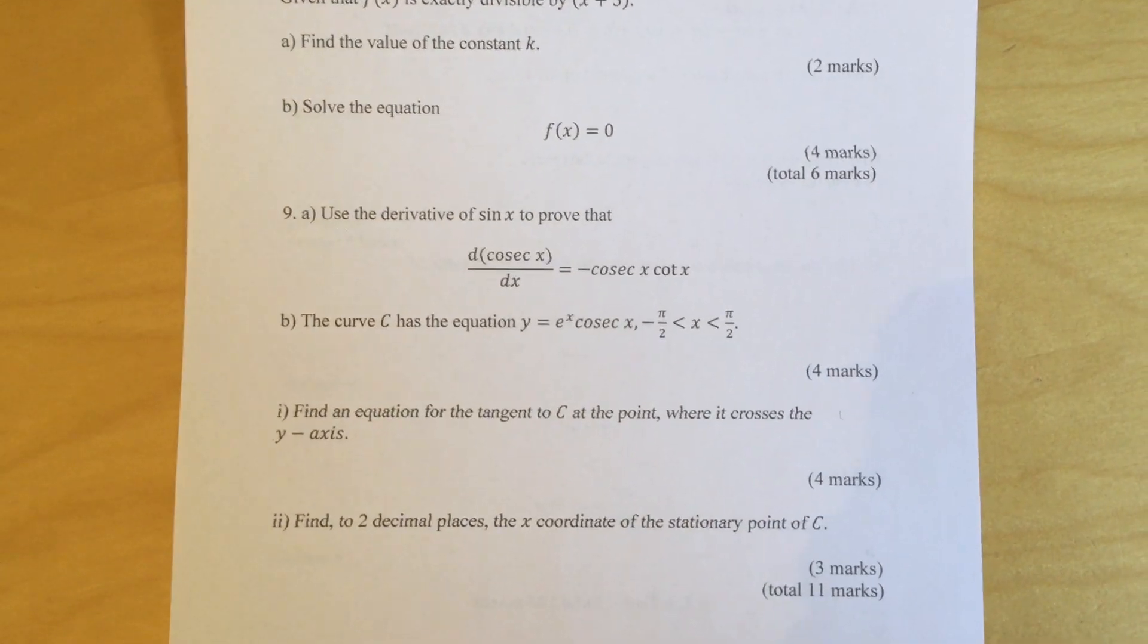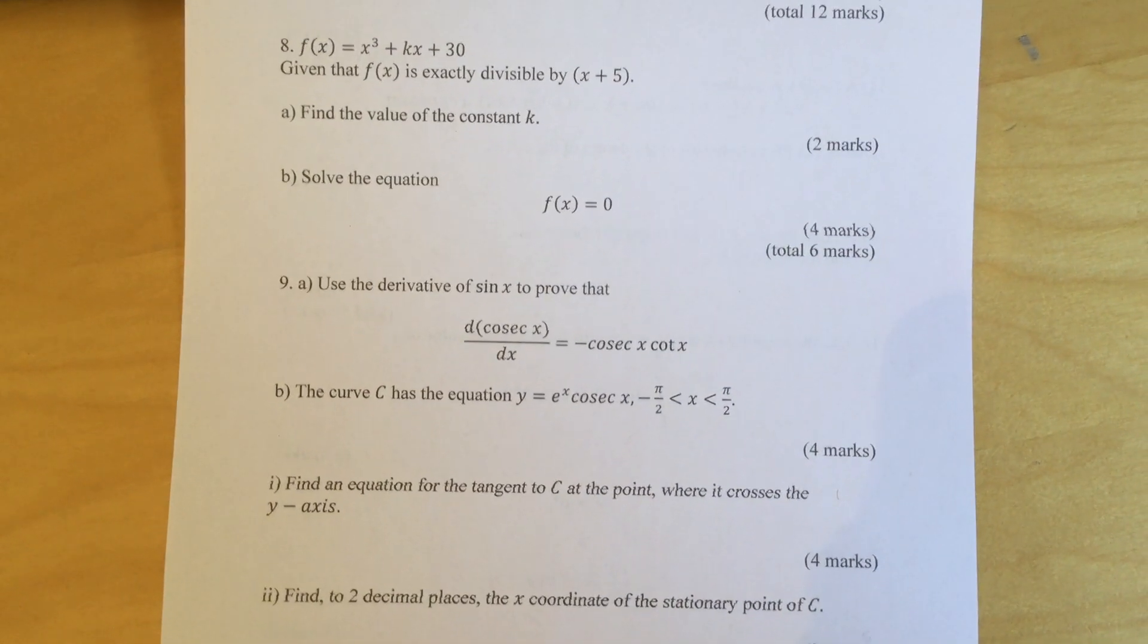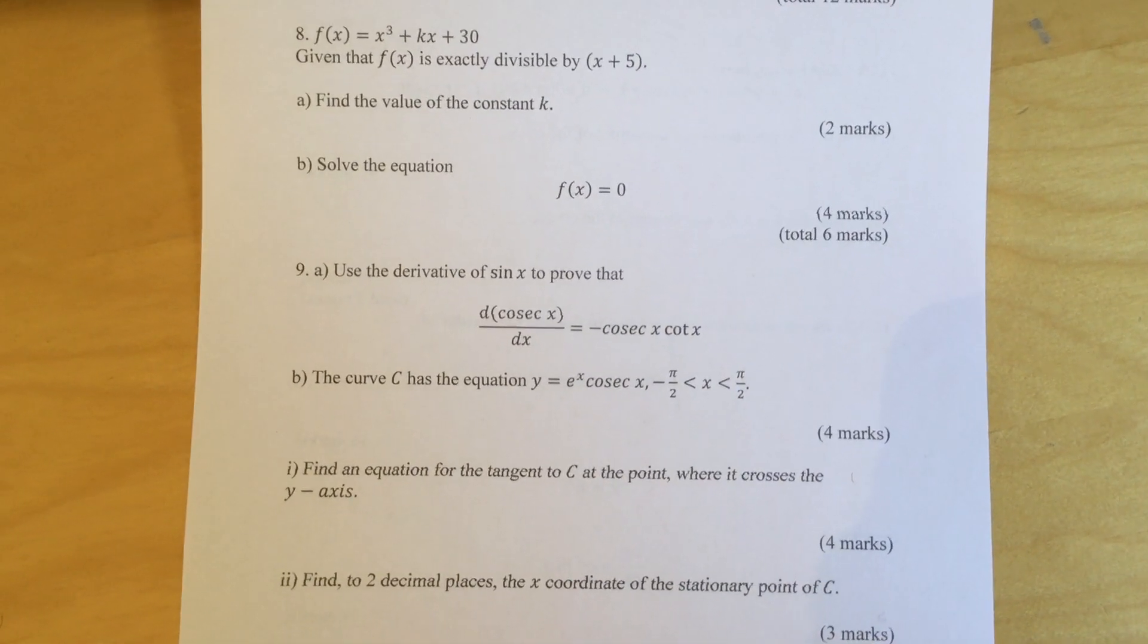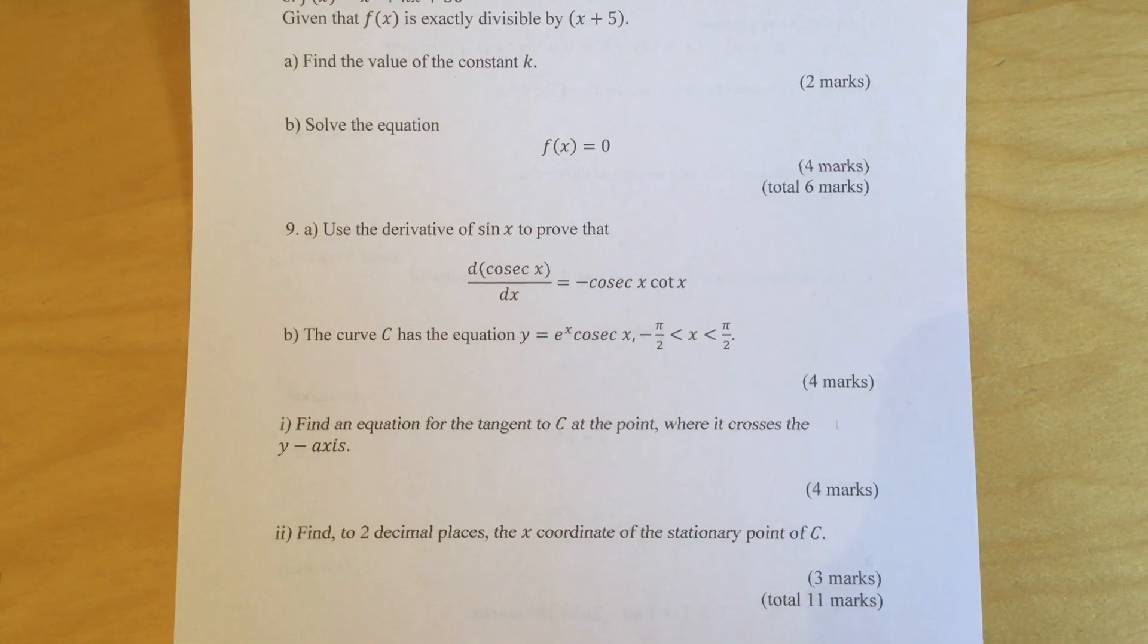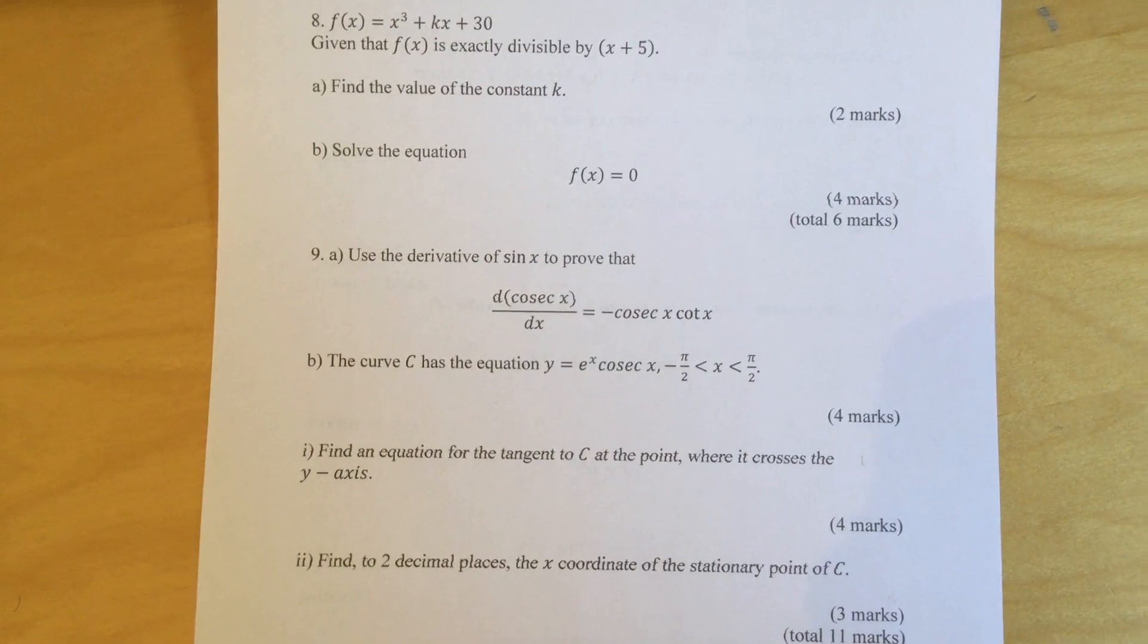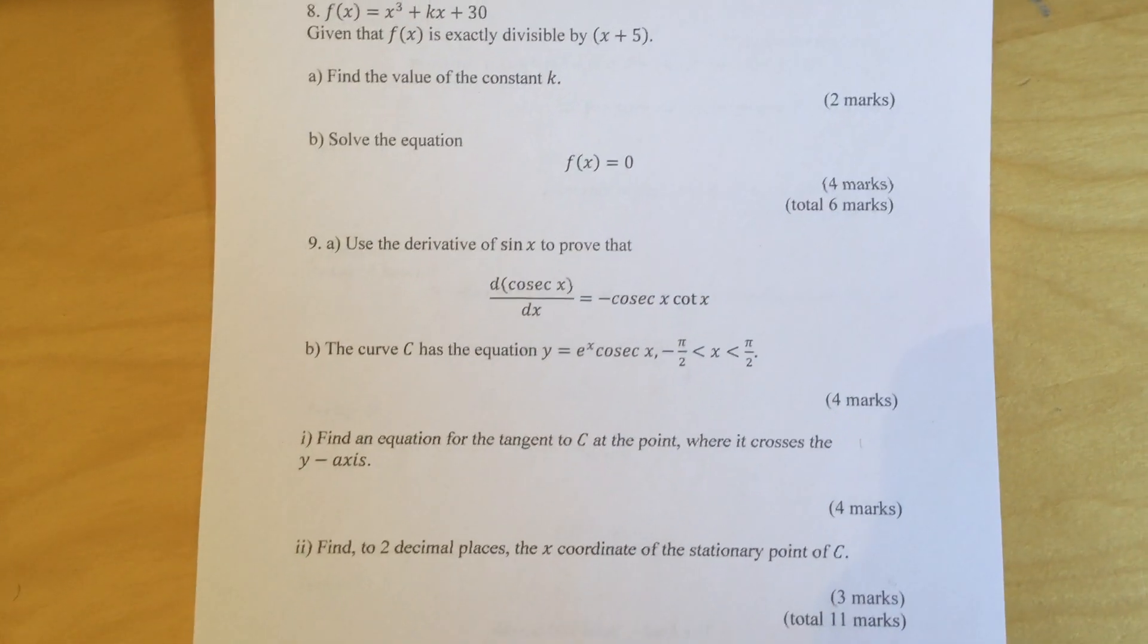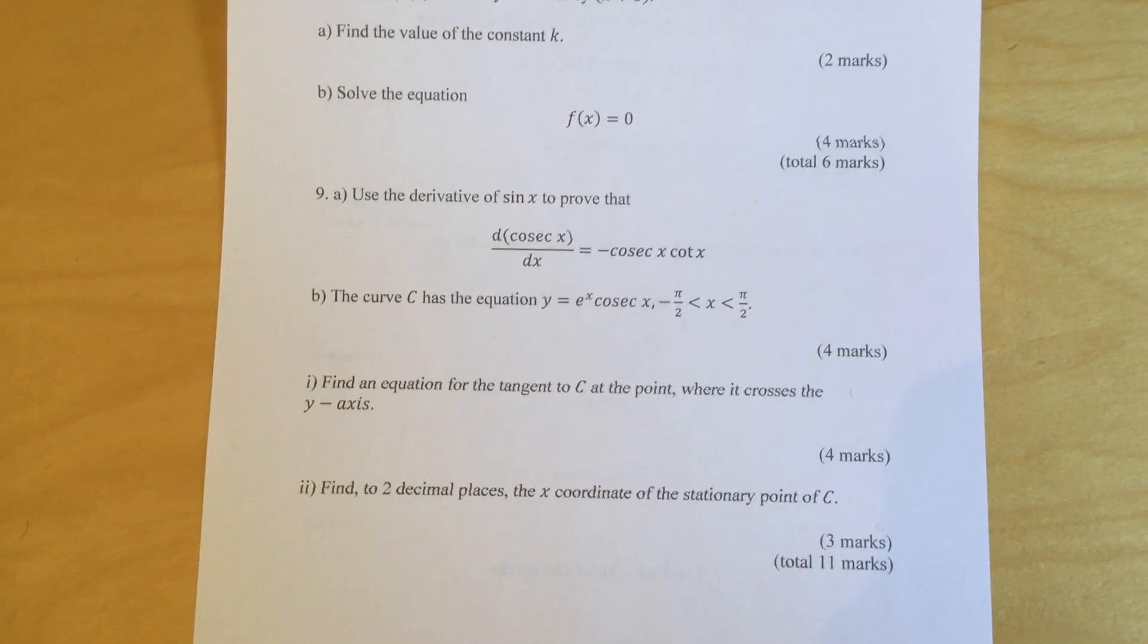Question 9: Use the derivative of sin x to prove that d/dx(cosec x) = -cosec x cot x. Part B: The curve C has equation y = e^x cosec x, where -π/2 < x < π/2. Find the equation for the tangent to C at the point where it crosses the y-axis. Part C: Find to 2 decimal places the x-coordinate of the stationary point of C.